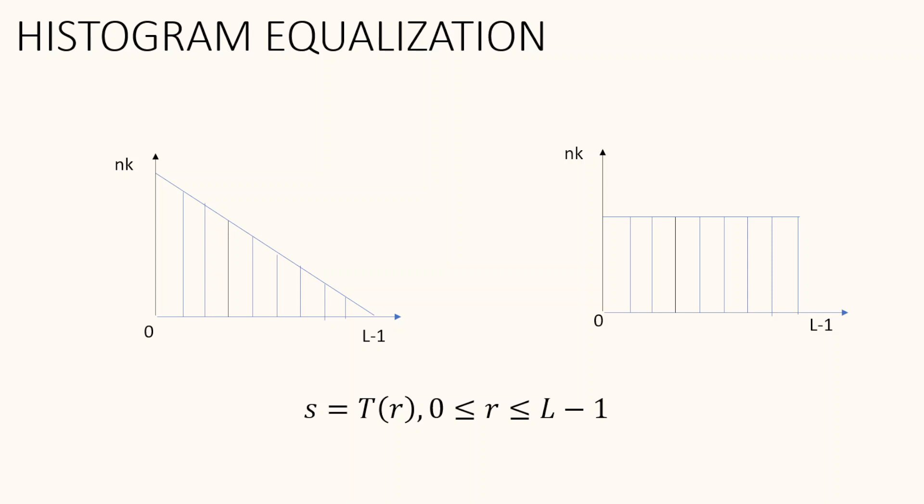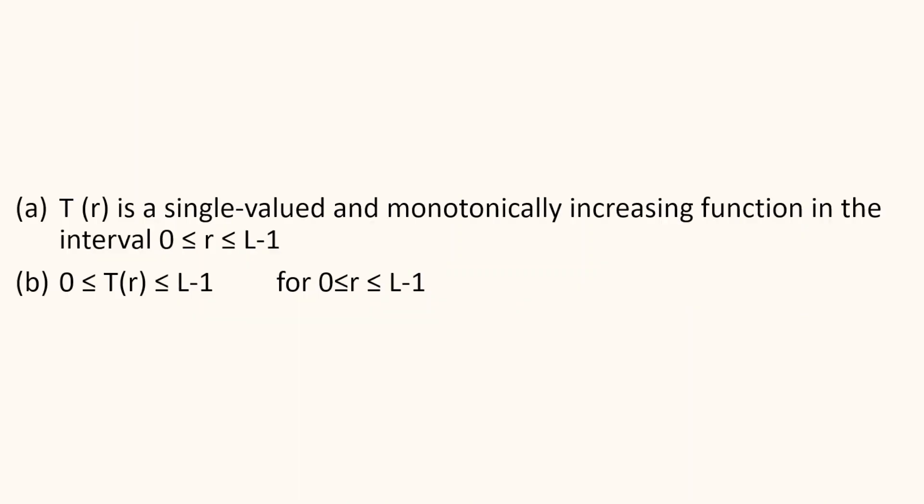Here is a transformation function given as the general form S = T(R). In this case, S is the intensity value of the transformed image, R is the intensity of the input image, and T is the transformation function. When this transformation function is applied on the input image, we get the transformed output image. In order to perform histogram equalization, there are two conditions to be satisfied.